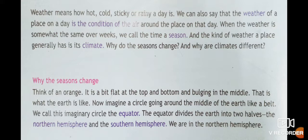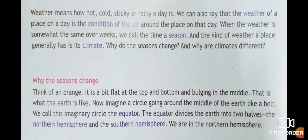Why do seasons change, and why are climates different? We will see in this video. First, we will see why the seasons change. Think of an orange — it is a bit flat at the top and bottom and bulging in the middle. Bulging means a little bigger than the top and bottom, and that is what the earth is like. Now imagine a circle going around the middle of the earth like a belt. We call this imaginary circle the equator. Spell the word equator: E-Q-U-A-T-O-R. The equator divides the earth into two halves.